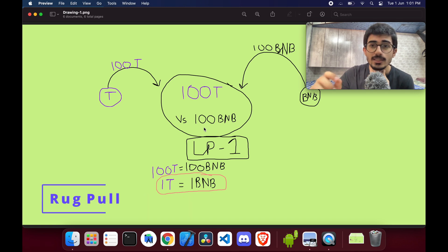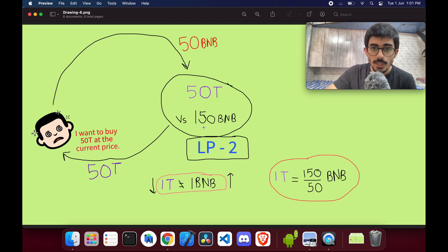Another thing is there is a concept of rug pull. I want to touch upon that because many people are getting scammed because of that. Rug pull is basically - say for example this person just bought it, bought 50 tokens and gave 50 BNB to the liquidity provider. The liquidity provider now removes this liquidity. What happens after that?